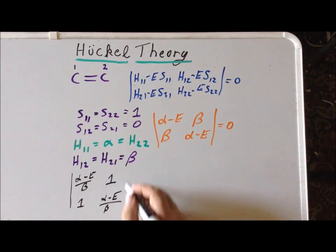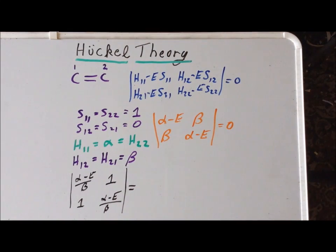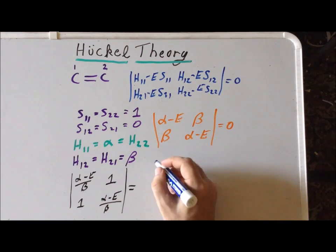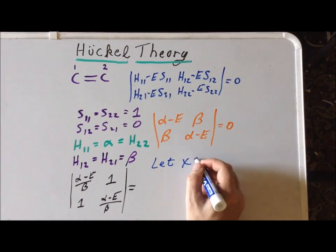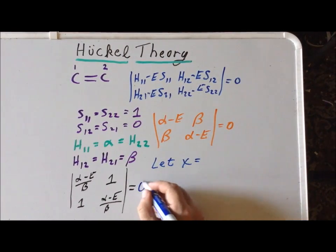Next, we can do one last feature which makes life easier. We simply make the assignment and let a new variable X be equal to alpha minus the energy divided by beta.